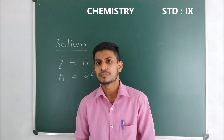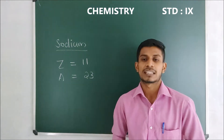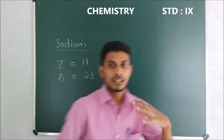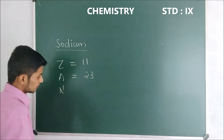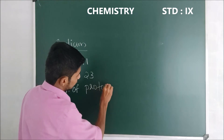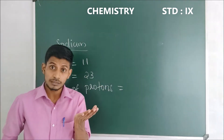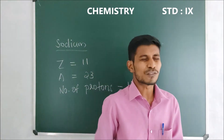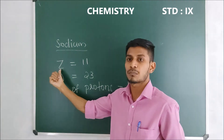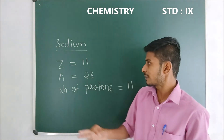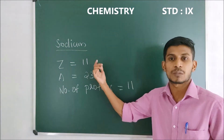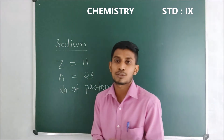OK. Let me call Diyah. Tell me, how many protons are present in the sodium atom? The number of protons is equal to 11. Very good. The number of protons in an atom is always equal to the atomic number. So the atomic number of sodium is 11, and therefore the number of protons in sodium will also be 11. And what about the number of electrons? The number of electrons is also equal to 11.